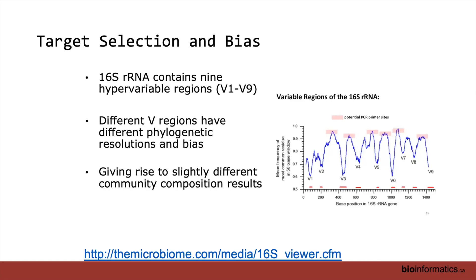If we focus in on 16S, we get into variable regions. This plot on the right shows conservation across the gene — the gene is about 1400 base pairs long. You get conserved areas and then more variable regions. This is great from a sequencing standpoint: conserved regions are great for designing primers, and then you get variability to give you resolution across different taxa. Because most of our sequencing has been using short-read sequencing — primarily Illumina — with reads of 150 to 300 base pairs, you're not going to cover the whole 1400 base pair gene. So you have to pick a variable region.